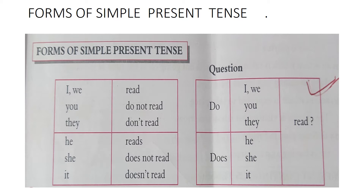In the given table is the simple present tense. Simple present tense is used to express an action that takes place at present or at the time of speaking. We can learn to form sentences in the affirmative, negative, and interrogative. For example: 'She reads the poem regularly' — affirmative. 'They do not read regularly' — negative.